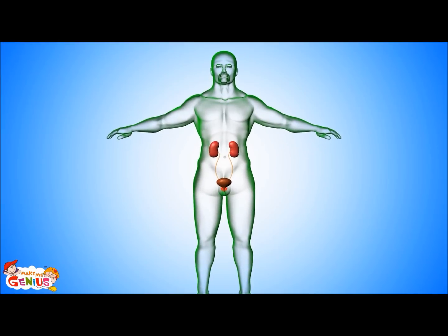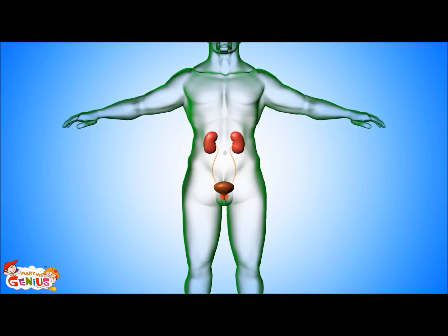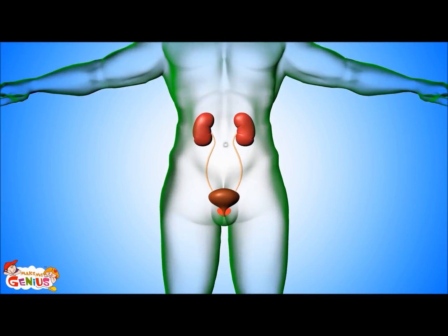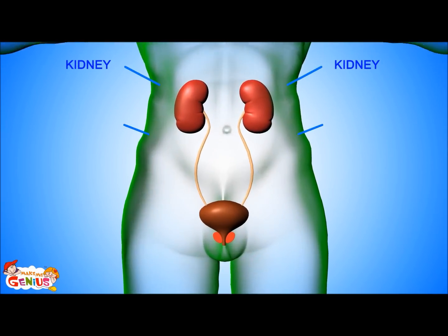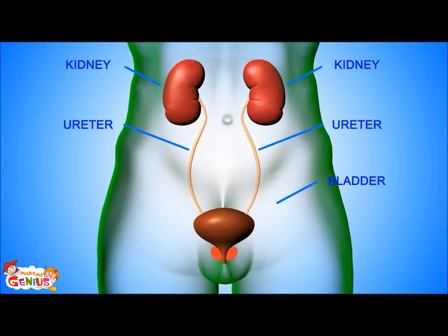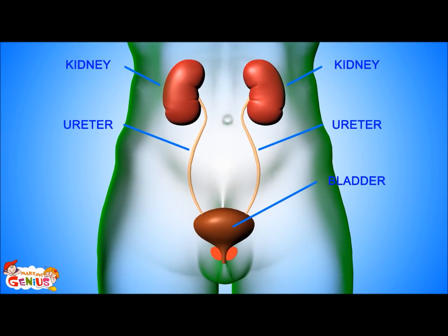The main parts of the urinary system include two kidneys, ureters and bladder, and a urethra.